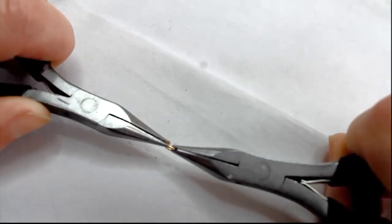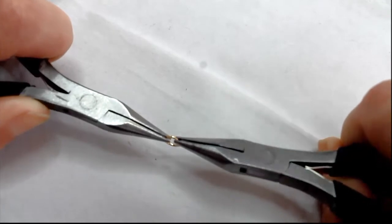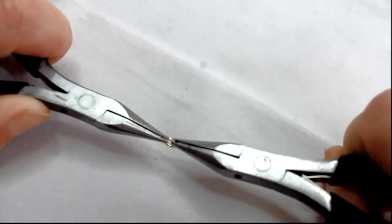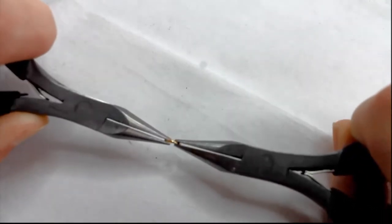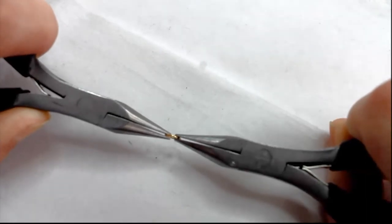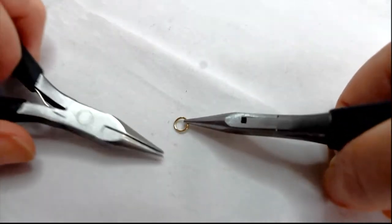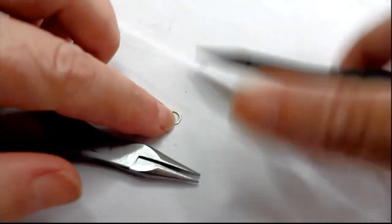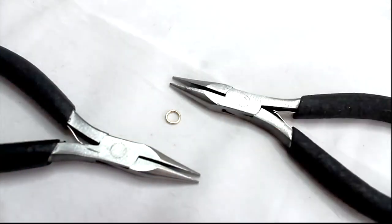When you hear the click, you know that you've properly tensioned the jump ring. Make sure that it's lined up properly at the top and you have a perfectly closed jump ring and jewellery that won't fall apart.